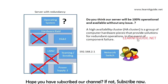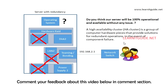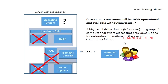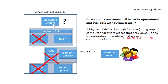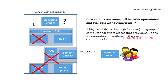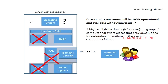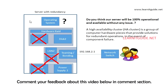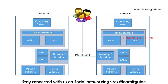High availability cluster is a group of computer hardware pieces that provide a solution for redundant operations in the event of component failures. Clusters are mostly used for your operating system because we don't have a redundant option for that. The commonly used cluster is a 2-node or 3-node cluster, but we can have up to 64-node clusters depending on the cluster software used.